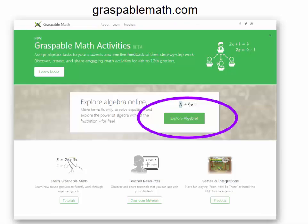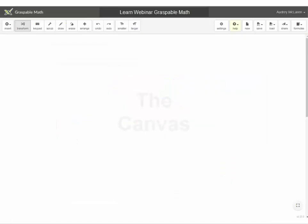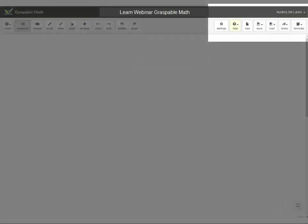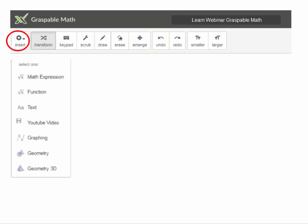From the Graspable Math website, you can start exploring by clicking on the Explore Algebra button, and that'll bring you to what's called a canvas. At the top right are buttons for management, and they're pretty self-explanatory. I'm going to focus on these buttons on the top left, specifically these three buttons that I find myself constantly switching between. I'll start with the Insert button. If you click on Insert, you get this pull-down menu, and here are some of the things that you can insert directly onto the canvas.